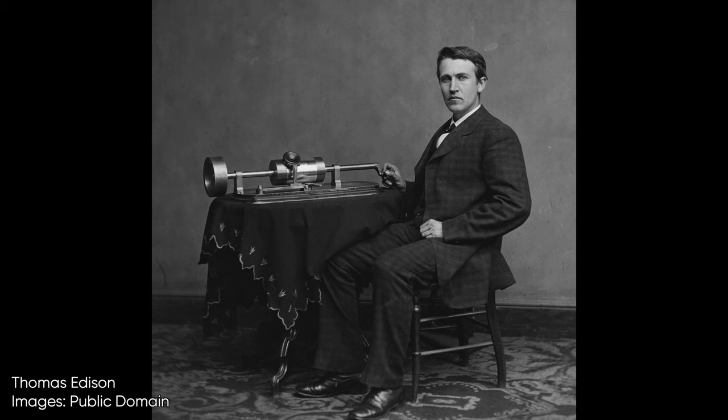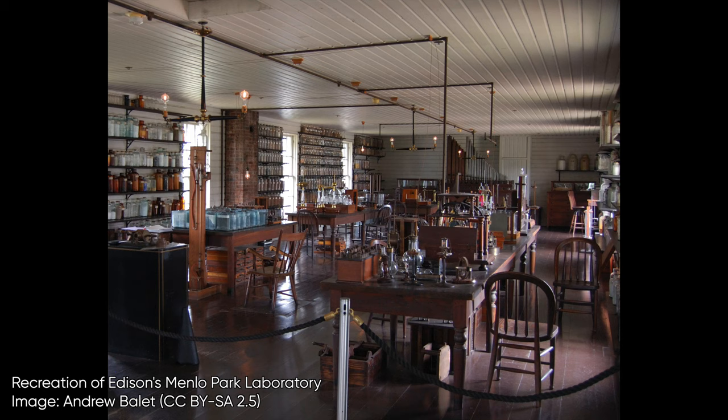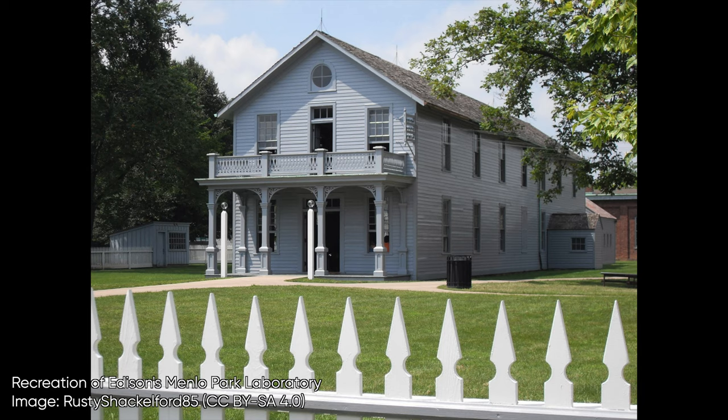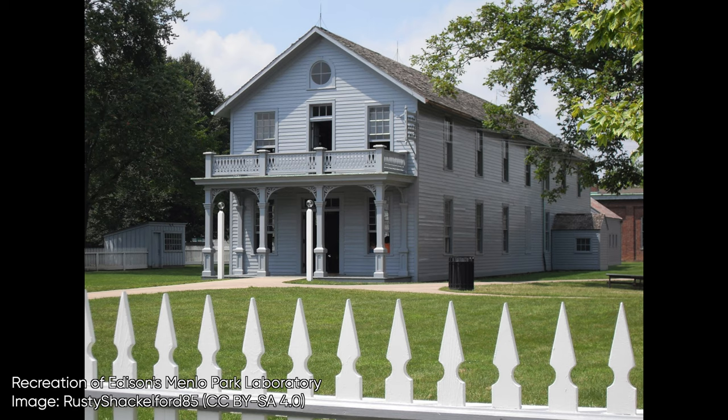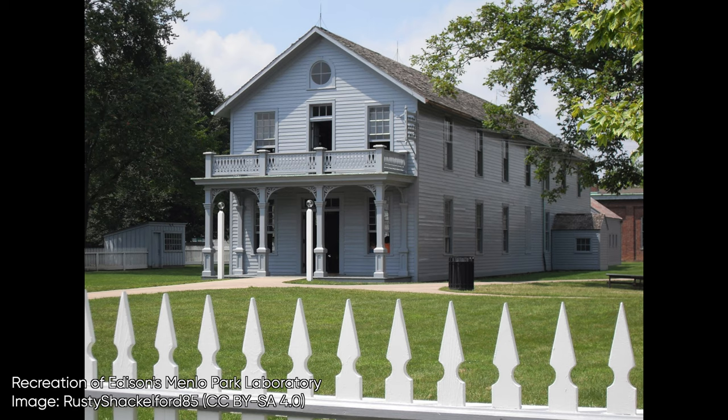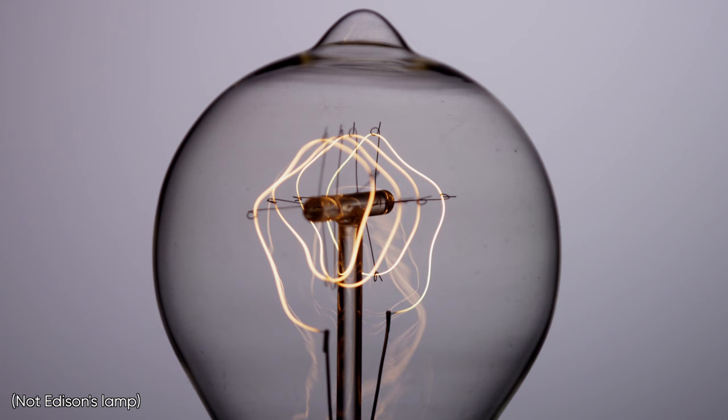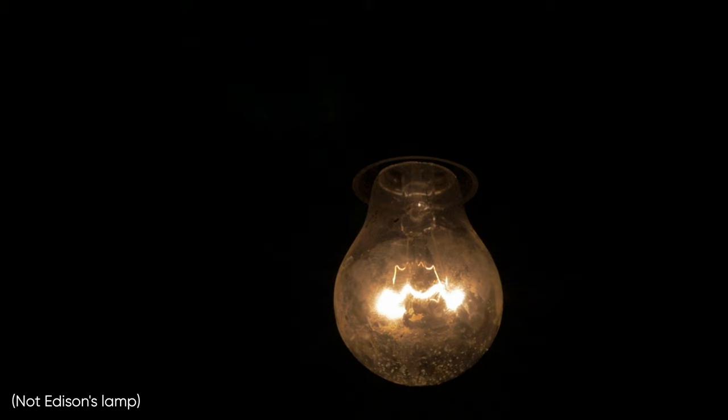In what's considered to be a separate line of research and development from Swan, the American inventor Thomas Edison had tried hundreds of methods for making long-lasting incandescent lamps. At almost exactly the same time as Swan, Edison and his team came up with a working lamp that used a platinum filament in a vacuum inside a glass bulb. However, even in a vacuum, this lamp required way too much power.